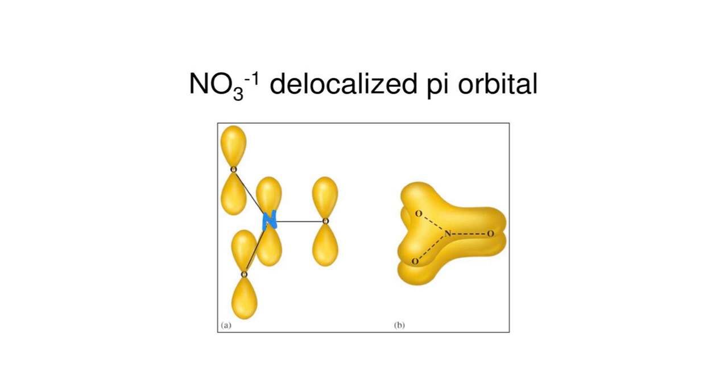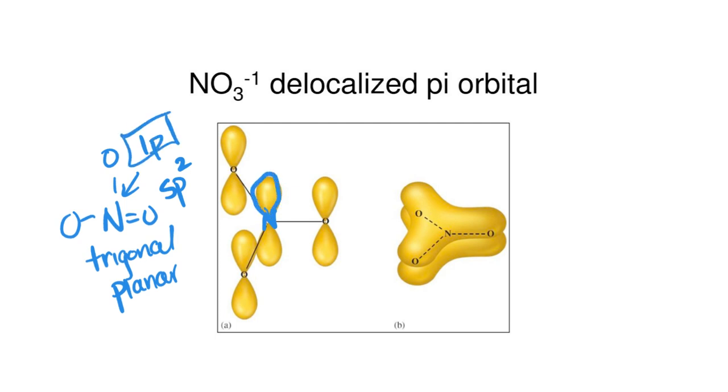If we take nitrogen in the nitrate ion since we're showing one double bond and the other single, it's based on a trigonal planar shape and so it has sp2 hybrid orbitals which means that there is an unhybridized p orbital and so that's what's showing here is this unhybridized p orbital.